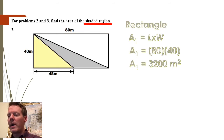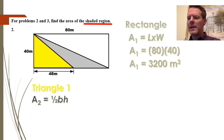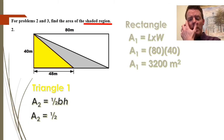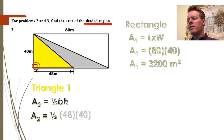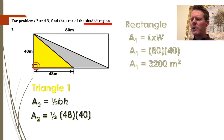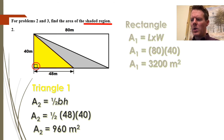Now I'll go after one of the triangles — call this triangle one. The area of a triangle formula is one half base times height, and the base and height have to be perpendicular to each other. They are in the corner — it's a right triangle. So it's 40 and 48 for the base and the height. One half of 48 times 40 gives 960. That's the area of that yellow triangle.